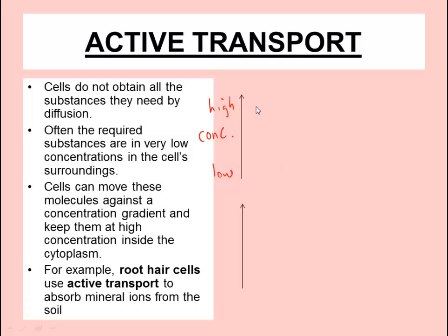Let's say there's a molecule outside you — maybe it's oxygen — and it's at a high concentration, while inside the cell it's at a low concentration. You've got a concentration gradient from high to low and it can roll down. You might imagine it's like a football rolling down a slope. You can see that football is going to run down the slope without any extra energy input.